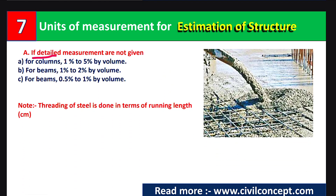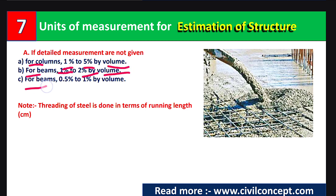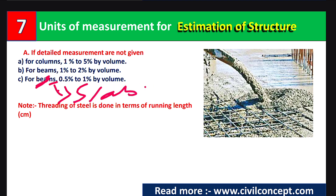If detailed measurements are not given, the following reinforcement percentages by volume can be assumed: columns — 1% to 1.5%; beams — 1% to 2%; slabs — 0.5% to 1%. Also, trading of steel is done in terms of running length.